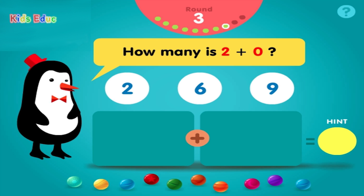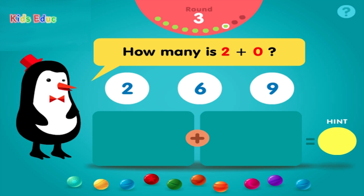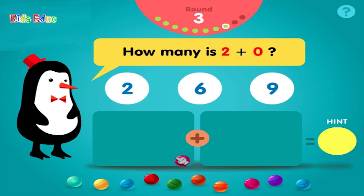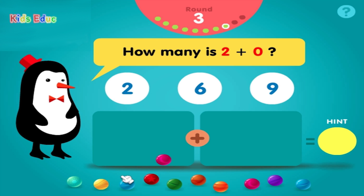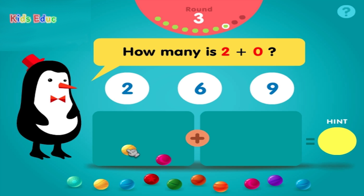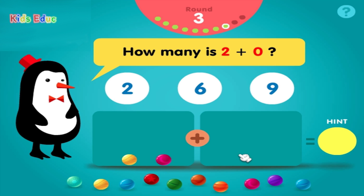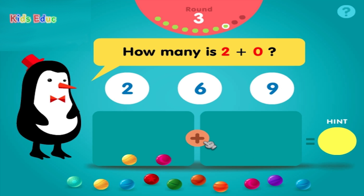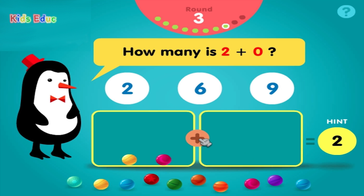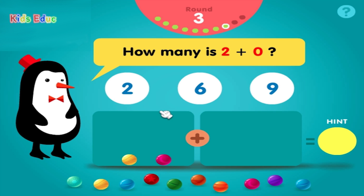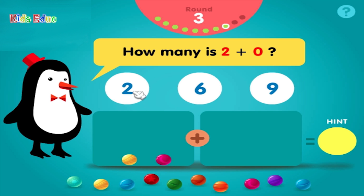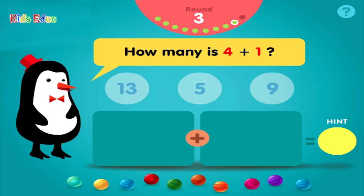How many is two plus zero? Two plus zero equals two. Radical.